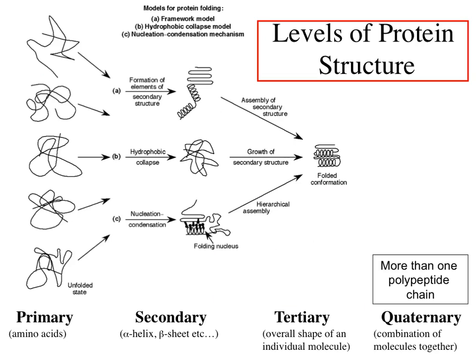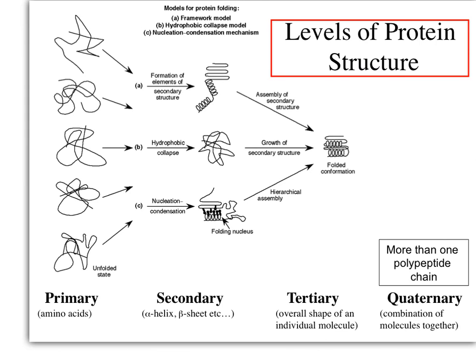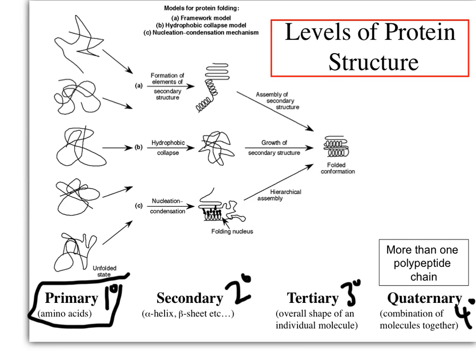There are four levels of structure for proteins. Very cleverly, they're called primary (designated by one with a degree symbol), secondary, tertiary, and quaternary. They form from a string of amino acids — the primary structure is just the string of amino acids — but what you end up with at the end is a very complex structure regulated by these four levels of protein folding. We're going to talk about what determines each level.